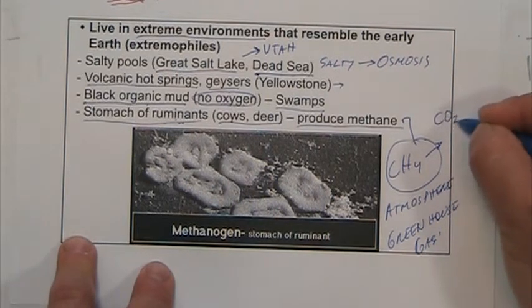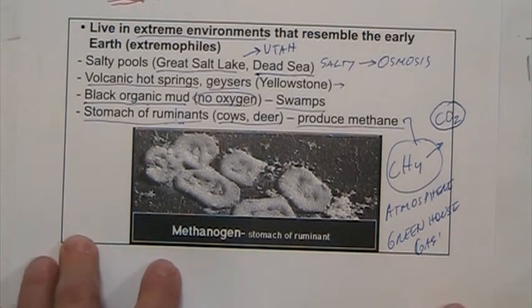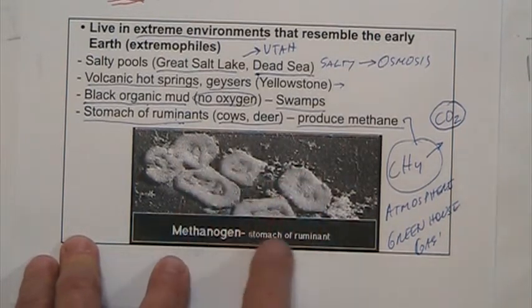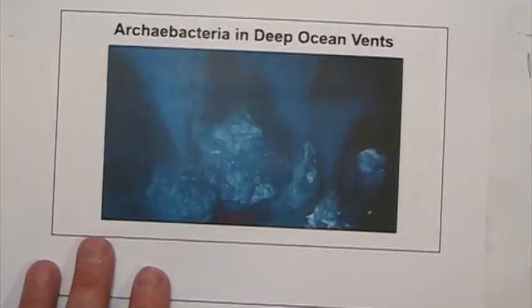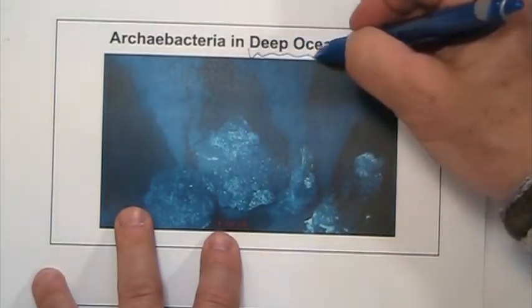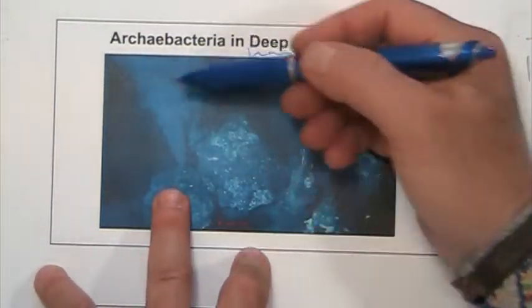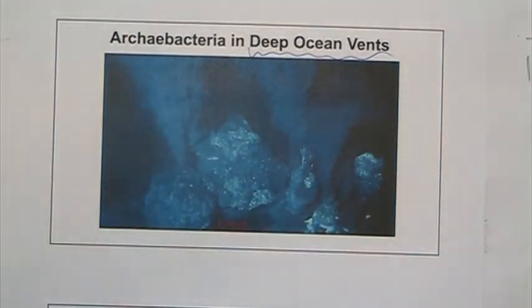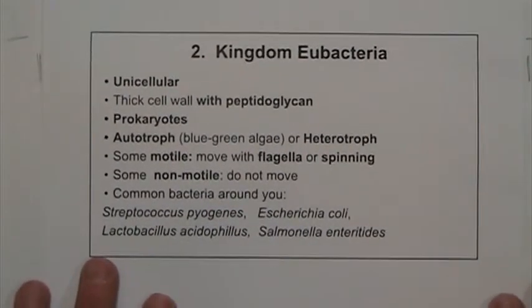Methane is very similar in atmospheric effects to CO2 — it retains heat and causes warming of the planet. You also find Archaeobacteria in the deep ocean vents, very deep in the ocean, where gases and hot water spew out and these bacteria live all around. The main things to remember: they do not have peptidoglycan and they really like to live in extreme environments.